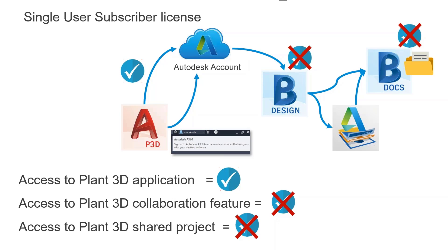In the subscriber world, that is done through Autodesk Account. When you launch the project, the product will ask you to sign in or identify your product, depending on how you've bought it. Autodesk Account will validate that you have the correct license to use Plant3D, but it will not actually give you access to the collaboration feature, even though it's installed with the product. When you click on that, it will tell you that you may not have the access rights.